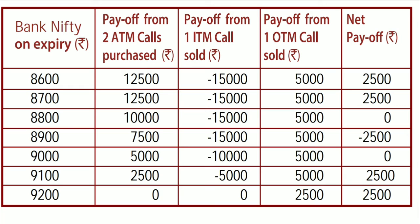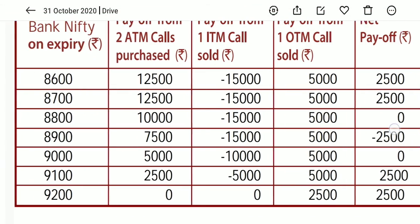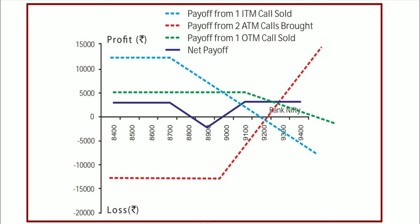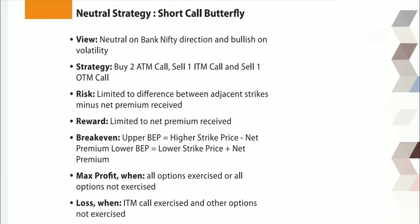You can see here: if Bank Nifty is between the upper BEP and lower BEP, then you have a loss of 25,000. If Bank Nifty goes above the upper BEP or goes below the lower BEP, then you have a profit. On the downward side there is profit, above it is also profit, but if it closes in between then you have a loss. This is the chart of the Short Call Butterfly.